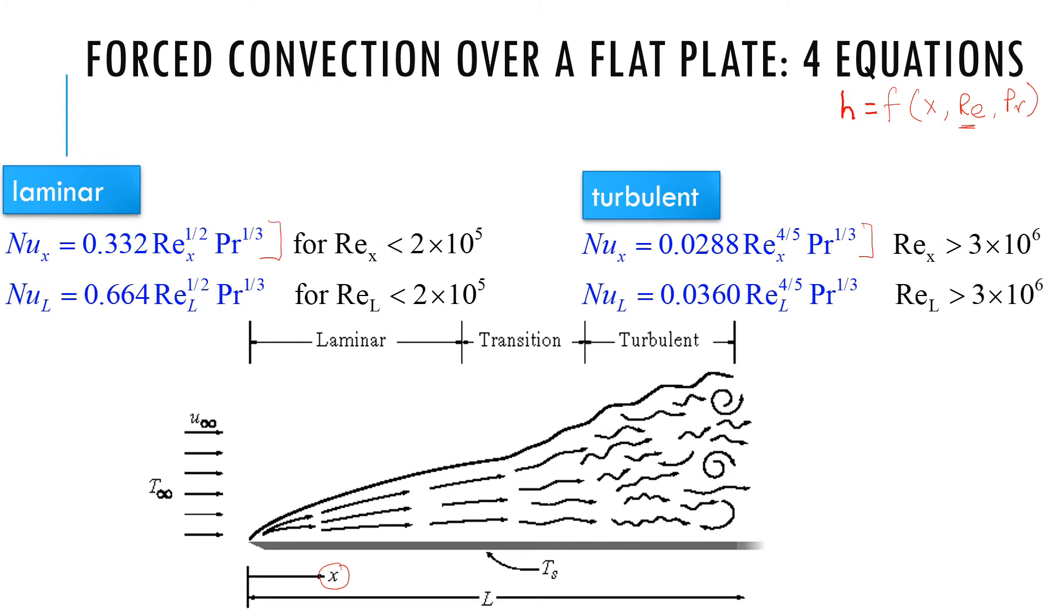Now we can expand this equation so that we understand the formulas completely. So let's do that. If I rewrite, Nu_x, Nusselt number, is H times X over K of the fluid equals 0.332, and Reynolds number and Prandtl number is U_infinity times rho times X over mu raised to the power half.